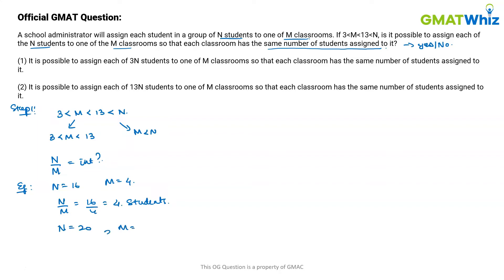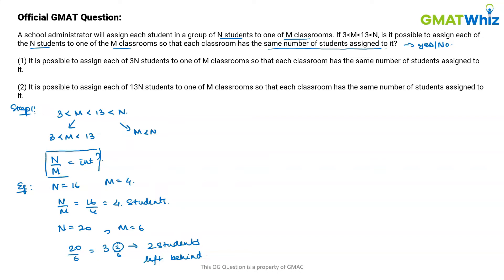But what if it does not divide equally? Take n equals 20 and m equals 6. When we divide 20 by 6 we get 3 remainder 2, meaning two students are left behind and must be distributed into some classes, making the distribution uneven. So each classroom does not have the same number of students. If n over m is an integer, each classroom has the same number of students.